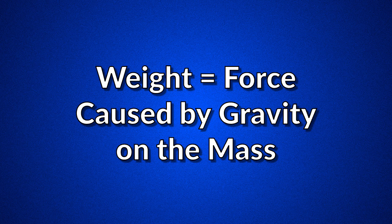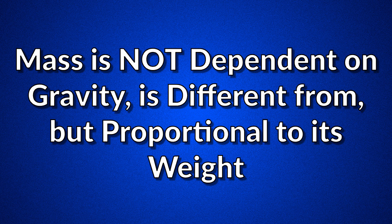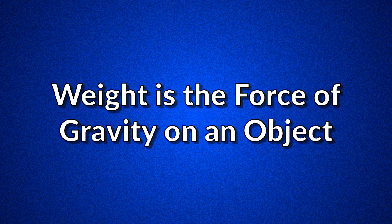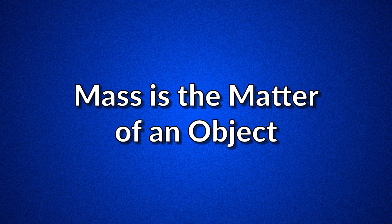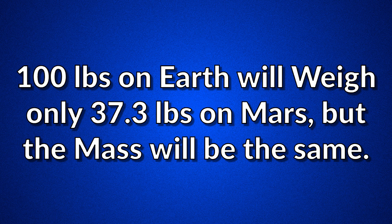Mass vs. weight: mass is the amount of matter something contains, and weight is the force caused by gravity on the mass. Mass and weight are two distinctly different units of measurement. The mass of an object is not dependent on gravity, and therefore is different from, but proportional to, its weight. Weight is the measure of force generated by the mass of an object by gravity. The difference between mass and weight is that mass measures how much matter comprises an object, while weight measures the gravitational pull. A 100-pound rock on Earth will weigh only 37.3 pounds on Mars because of the difference in gravity, but the mass of the rock would be the same.